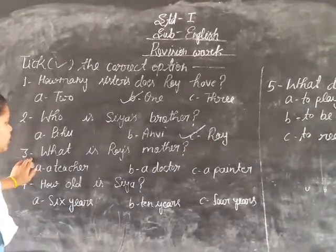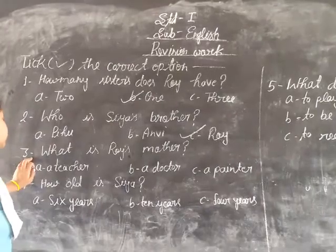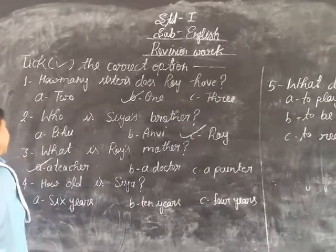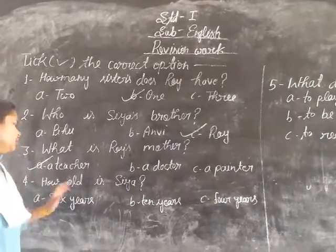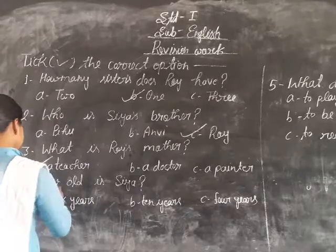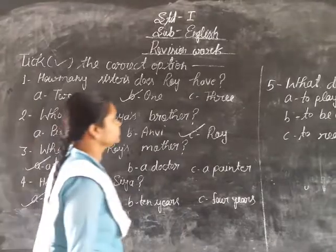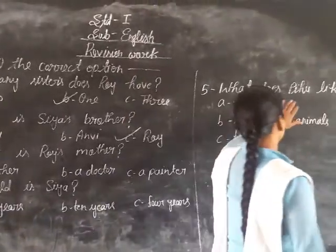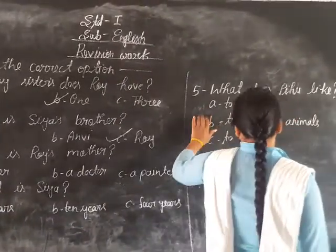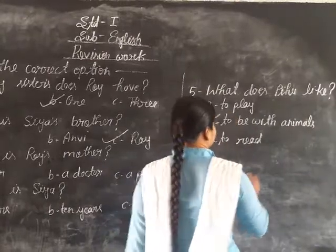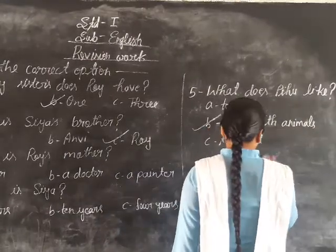What is Roy's mother? Option A: teacher. How old is Siya? Siya is 6 years old. So what does Q like? Option B: to be with anyone.